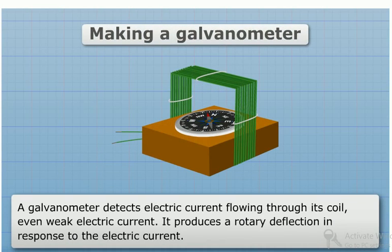Making a galvanometer. A galvanometer detects electric current flowing through its coil, even weak electric current. It produces a rotatory deflection in response to the electric current.